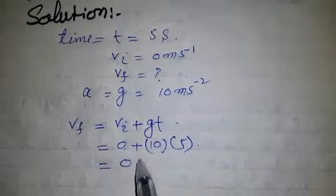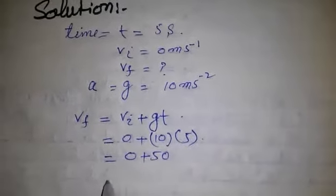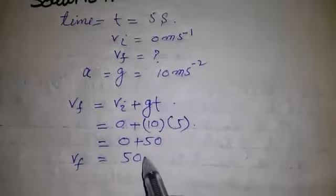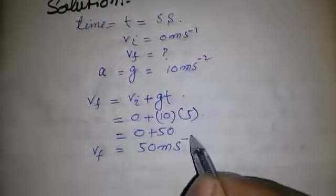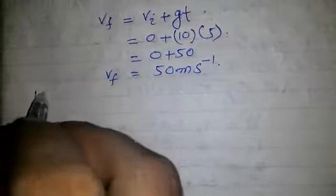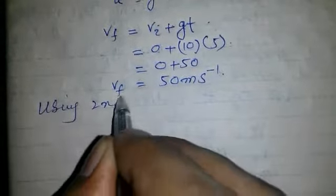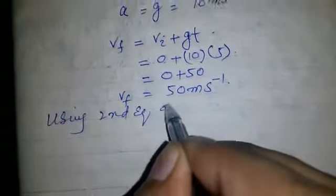Which is equal to 0 plus 50, so vf is equal to 50 meters per second. Now we are using the second equation of motion.